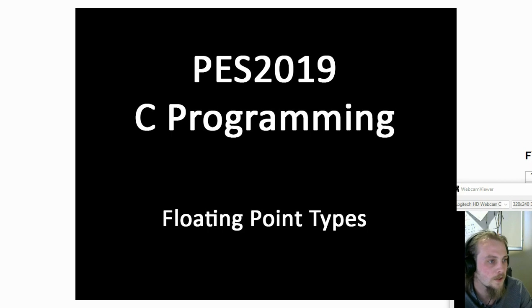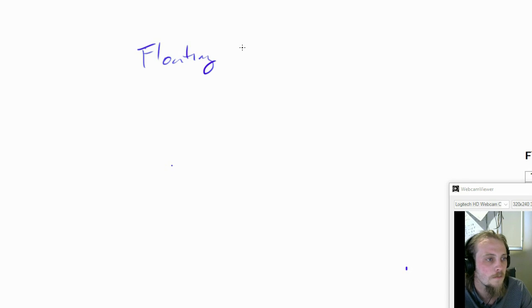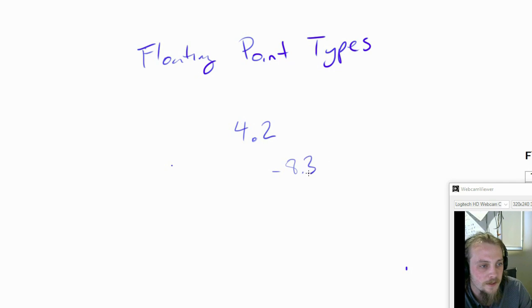All right, the next type we're going to look at is the floating point types. This allows us to store numbers with a fractional part or that contain a decimal point. For example, 4.2 or negative 8.3.